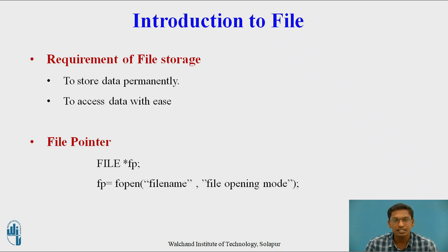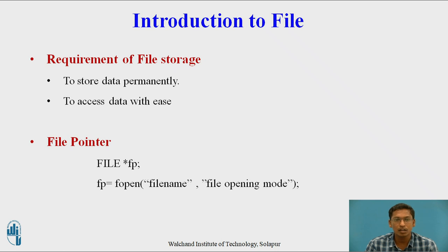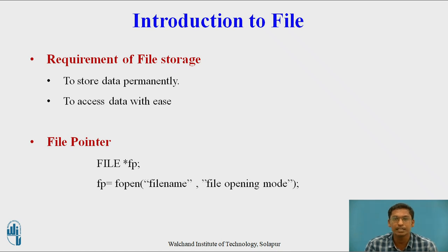The next function is fopen. fopen is a function used for opening a file either for reading or writing purpose. The fopen function accepts two parameters: the first one is the file name, and the second one is the file opening mode. The return type of fopen is a file pointer.